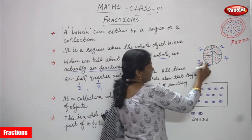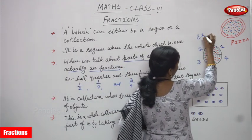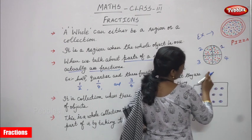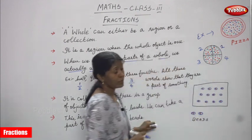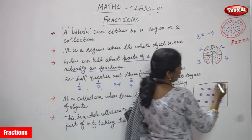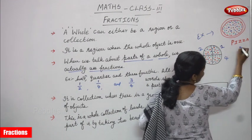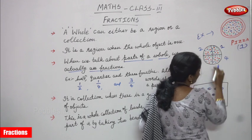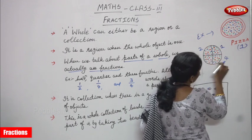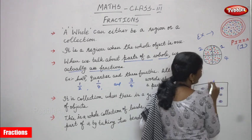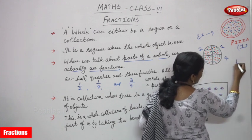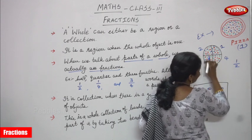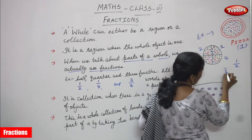For example, I have taken a pizza. It is a whole pizza and I cut it into four equal parts. If I need half, that means one by two. If I need three-fourth, that means I need three parts — three by four.